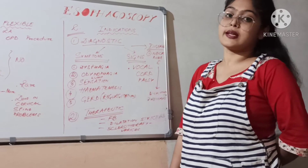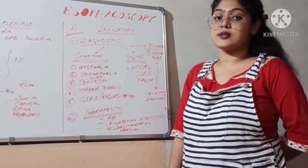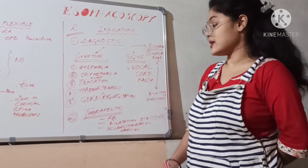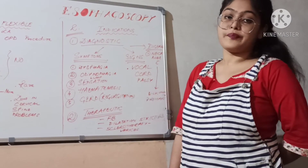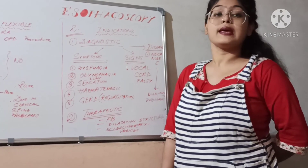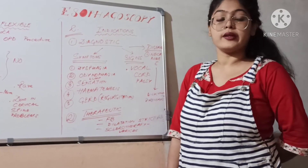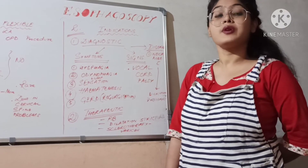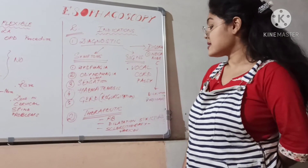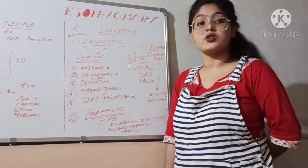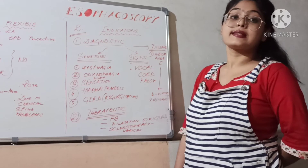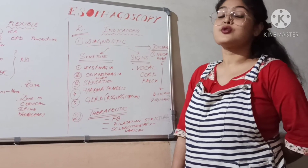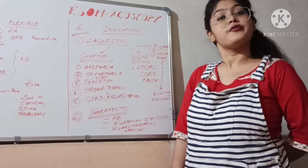These were the diagnostic indications. Moving on to therapeutic indications — with esophagoscopy you can treat the patient in the following cases: foreign body removal, such as a denture or mid-bowl, done with rigid esophagoscopy; dilatation of strictures; and sclerotherapy in esophageal varices. These were the indications of esophagoscopy.